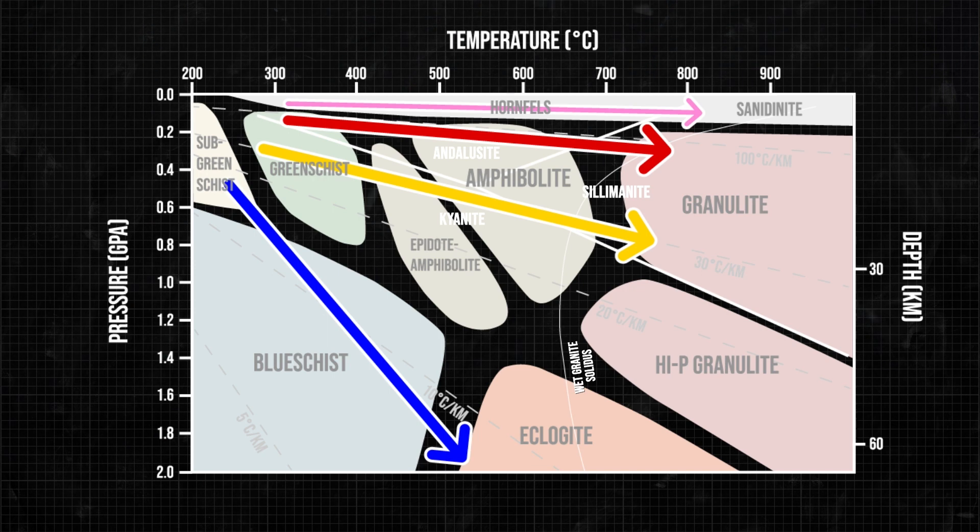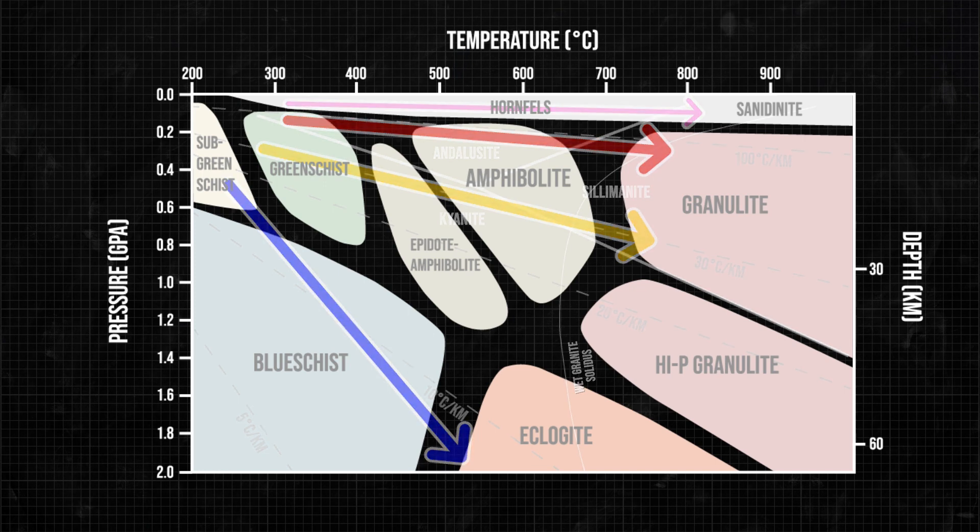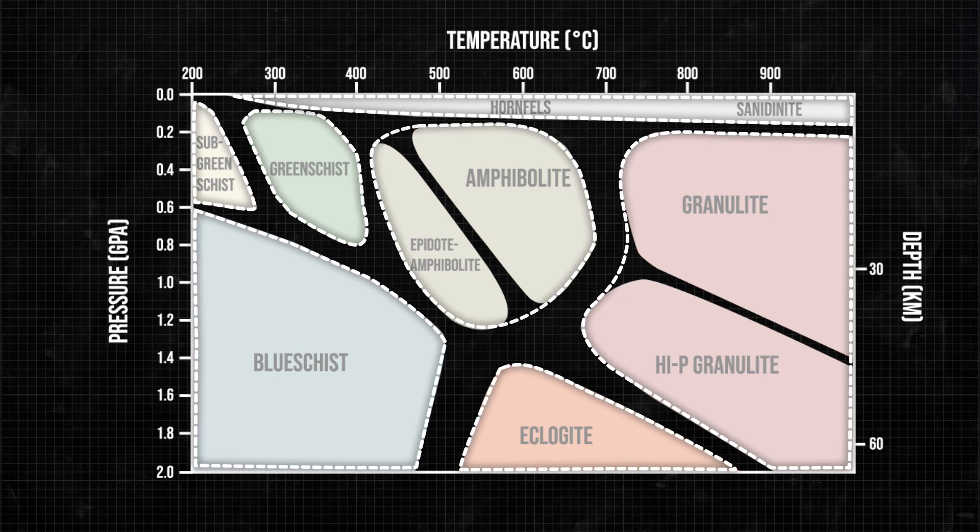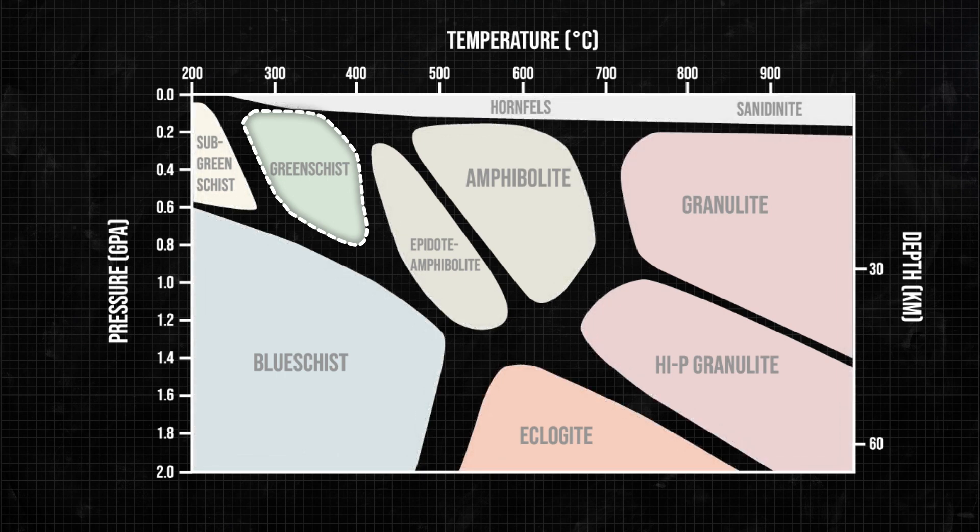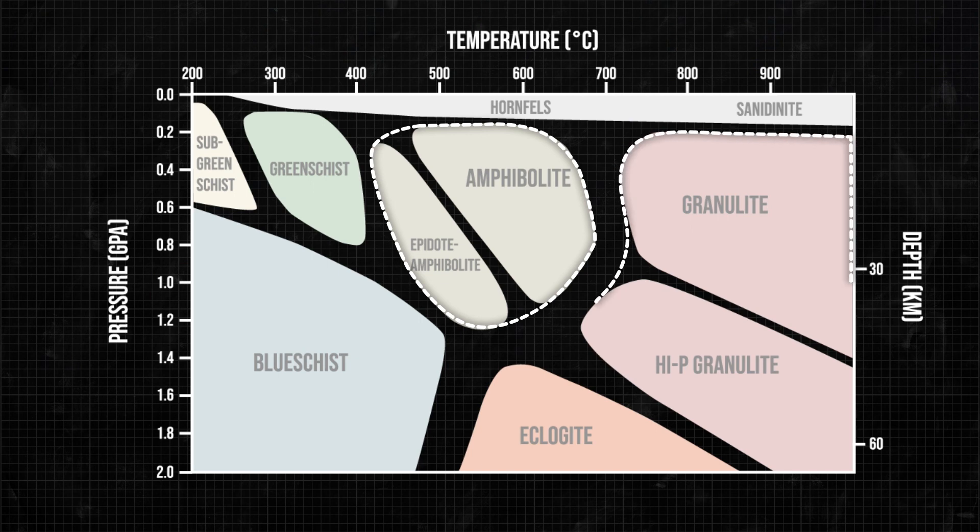This metamorphic facies diagram has a lot of interesting stuff on it. There are seven colored areas labeled with the name of a different metamorphic facies. You can tell that greenschist facies rocks form at lower pressures, shallower in the crust, than do blueschists. You can also easily see that amphibolites form at lower temperatures than do granulites.